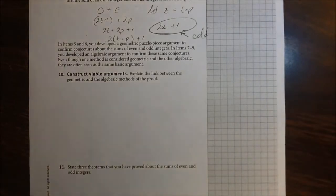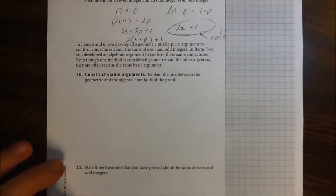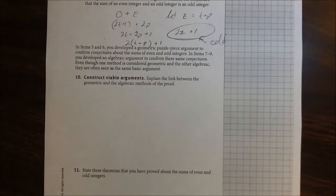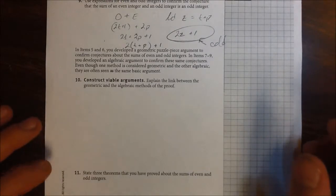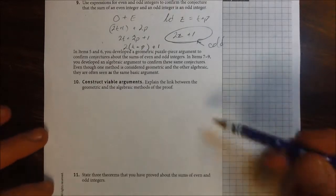So, last two items in this lesson. Let's read this paragraph. It says, in items 5 and 6, you developed a geometric puzzle piece argument to confirm conjectures about the sums of even and odd integers. So those were all those shapes, and putting them together and creating rectangles, or rectangles with an extra tile piece. In items 7 through 9, you developed an algebraic argument to confirm these same conjectures. Even though one method is considered geometric and the other algebraic, they are often seen as the same basic argument. And I hope that you got that when I was walking you through them and showing you all the similarities. So it says, item 10, explain the link between the geometric and the algebraic methods of this proof. So I hope that after watching this video, you can fill that out.